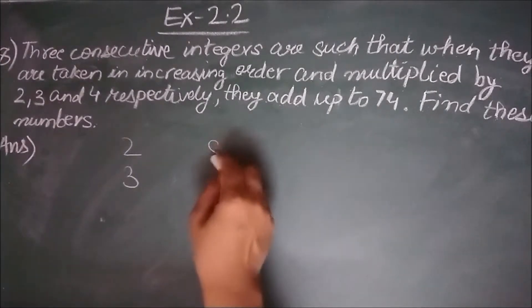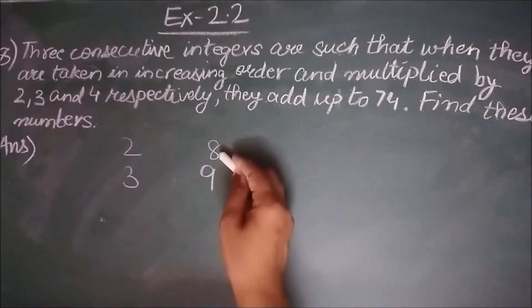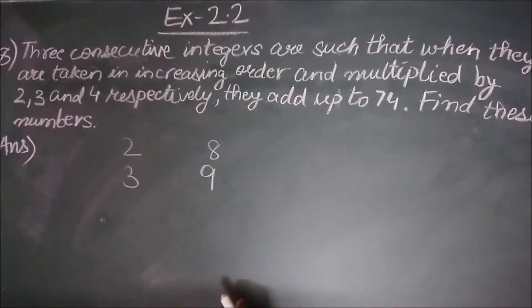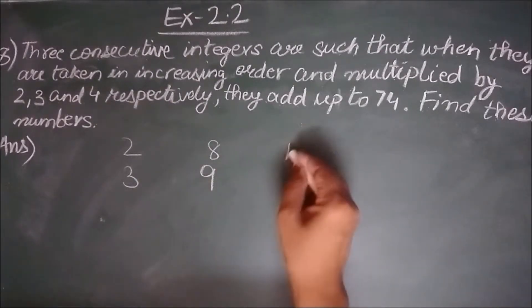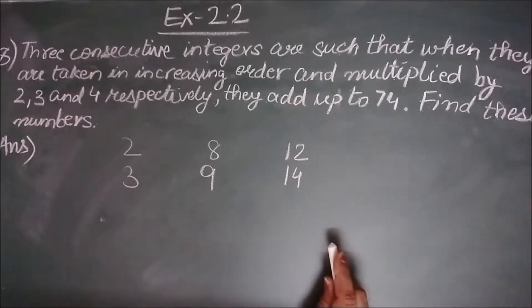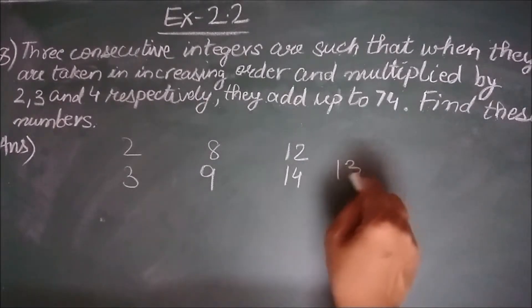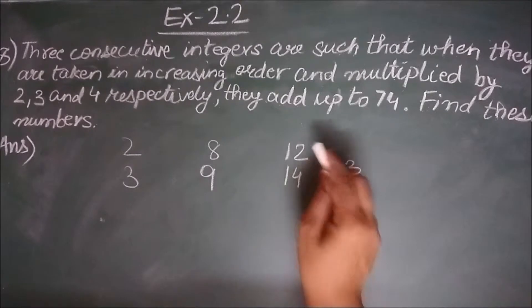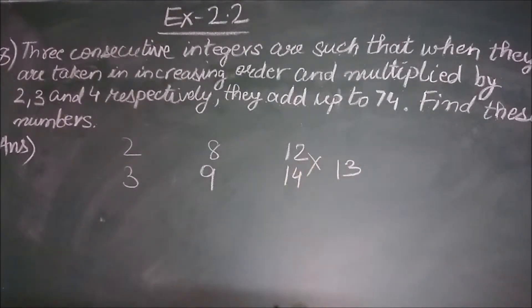Similarly, 8 and 9 are consecutive integers where 9 comes immediately after 8 and there is no other integer between 8 and 9. What about 12 and 14? They are integers but not consecutive integers because between 12 and 14 there is 13. So these are not consecutive integers.